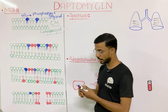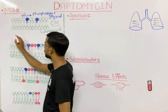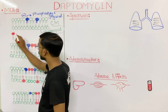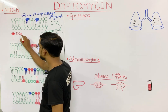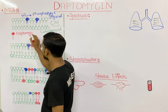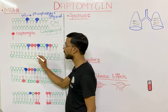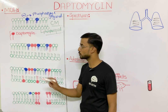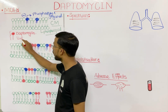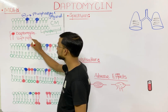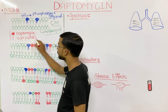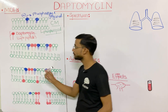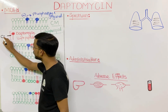Phosphatidylglycerol has a negative charge on it — that is an important point. Daptomycin is lipopeptide in nature, having two components: a lipid component and a peptide component. That is why we call it a lipopeptide.